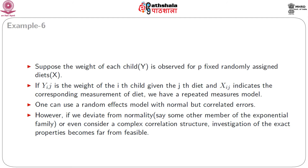Consider Example 6. Suppose the weight of each child, Y, is observed for P fixed randomly assigned diets indicated by X. If Y_ij is the weight of the ith child given the jth diet and X_ij indicates the corresponding measurement of diet, we have a repeated measures model. One can use a random effects model with normal but correlated errors. However, if we deviate from normality — say to some other member of the exponential family — or consider a complex correlation structure, investigation of the exact properties becomes far from feasible.